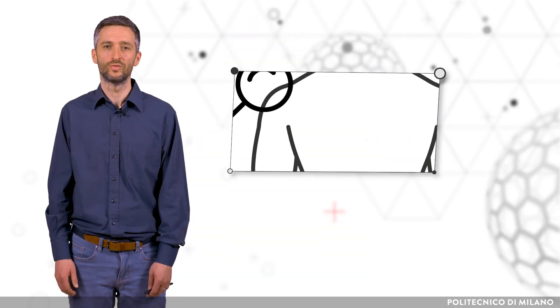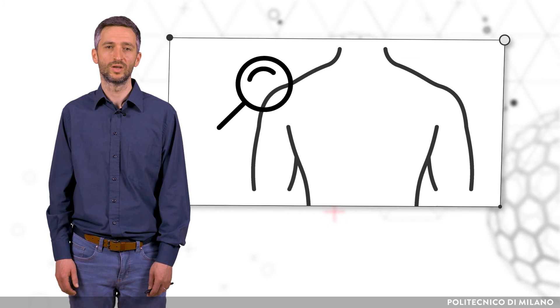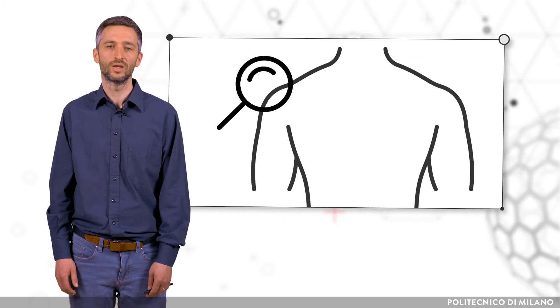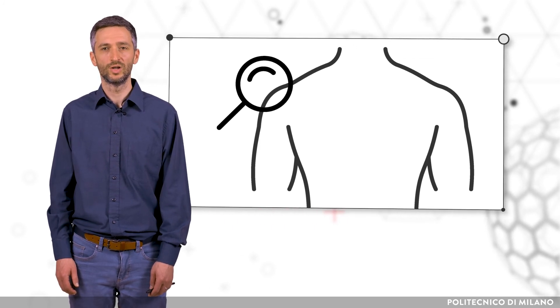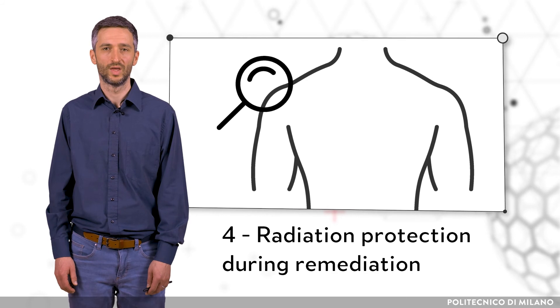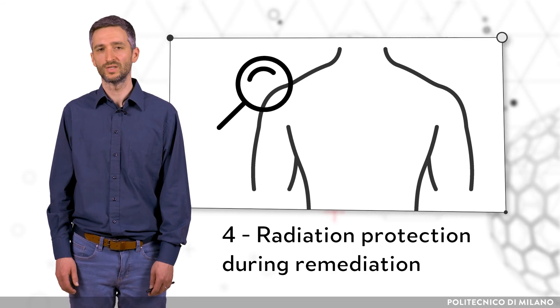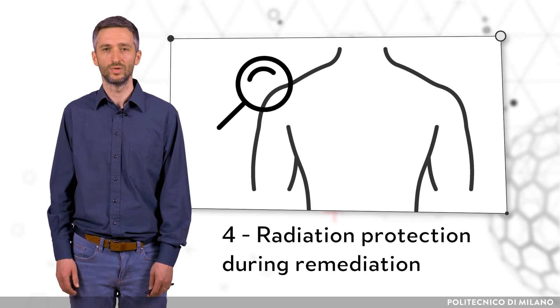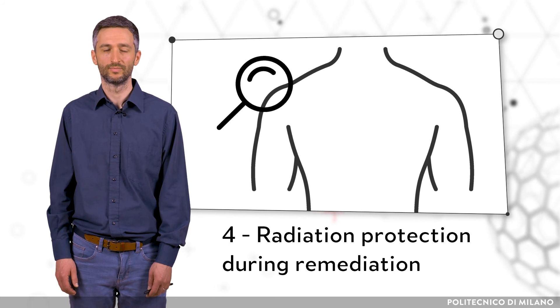Certain steps of environmental remediation might involve higher exposure to radionuclides for workers or the surrounding population. The reduction of expected dose and the measurement of radionuclide uptake is the field of radiation protection. Radiochemistry can support these actions with environmental monitoring and human biomonitoring.